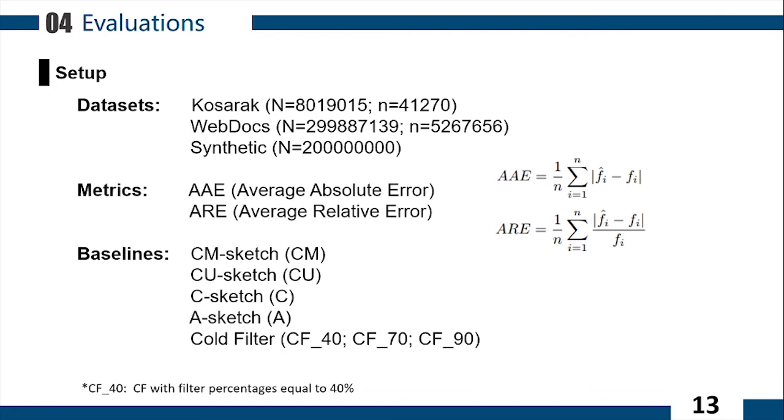Now, we show the evaluation results of XY-Sketch. We use both real datasets and synthetic datasets to test our XY-Sketch. We use AAE and ARE to measure the accuracy of the sketches. We compare XY-Sketch with five classical sketches. We show three CuckooFilters with different parameters. For example, we use CF40 to represent CuckooFilter with filter percentage equal to 40.